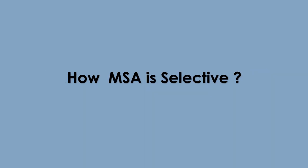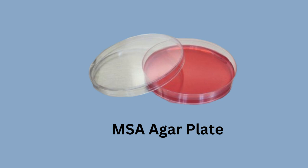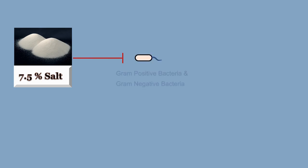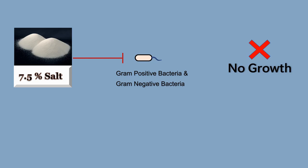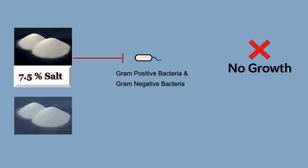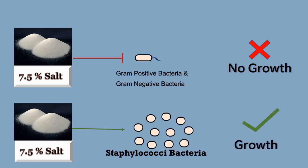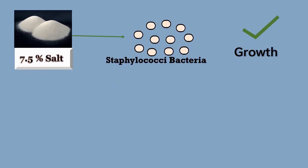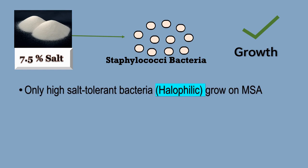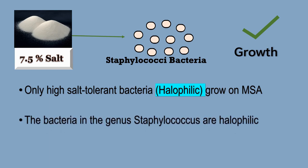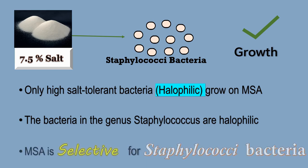First, we will see how it is selective. MSA agar contains 7.5% sodium chloride. This is a very high salt concentration. Such high salt concentration inhibits the growth of most gram positive and gram negative bacteria. So this medium is not suitable for routine bacteria such as E. coli. But in 7.5% salt concentration, Staphylococci bacteria grow and multiply very well. Only high salt concentration tolerant bacteria, which are known as halophilic bacteria, grow on MSA agar. The bacteria in the genus Staphylococci are halophilic, therefore the MSA agar is selective for Staphylococci bacteria.